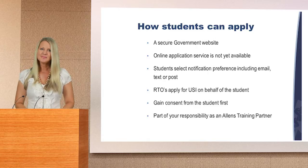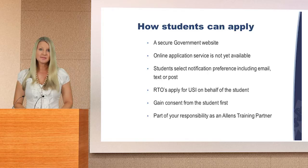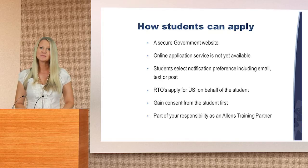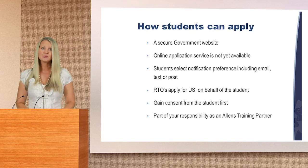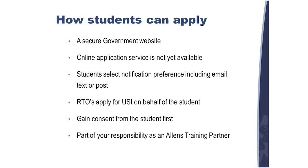How can students apply? Students will be able to apply for their USI through a secure government website. The online application service isn't yet available; however, we will advise as soon as the service is open for applications and provide the appropriate links and guidance material. Students can select during the application process their notification preference and how they would like to receive their USI. Options include email, text or post. If you select email or text, notification of your USI will be received automatically.